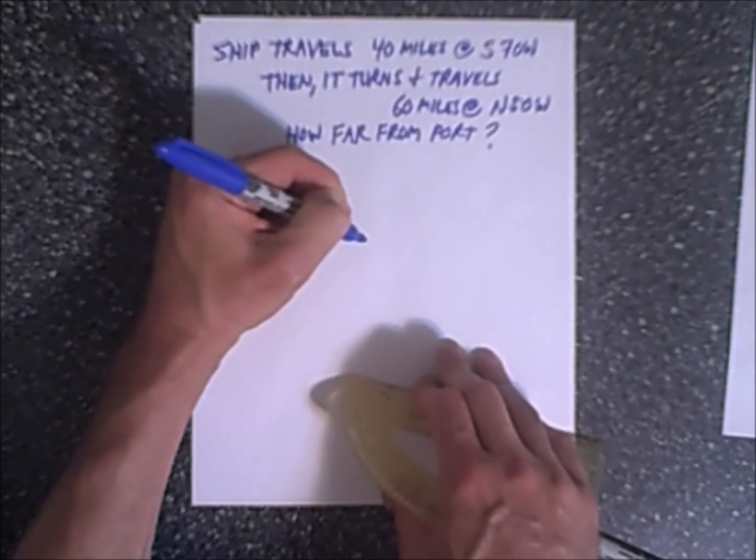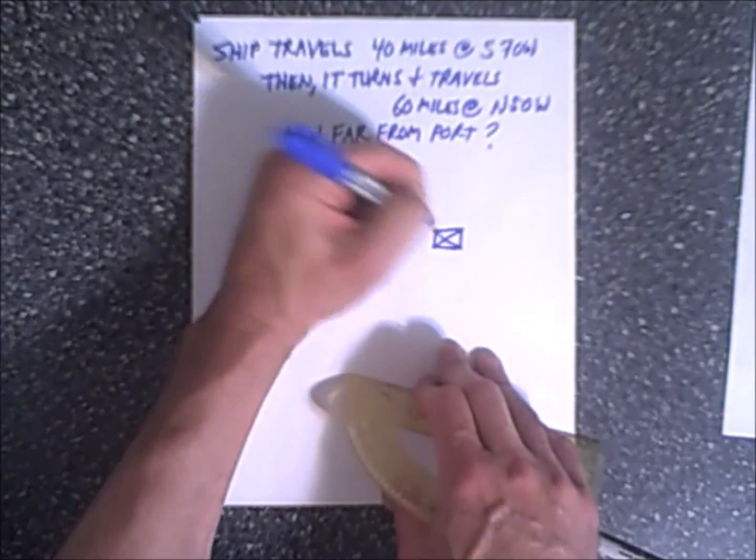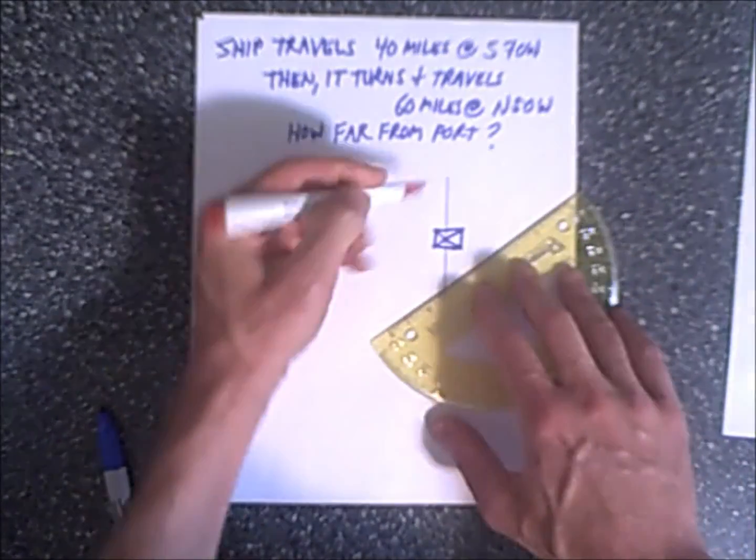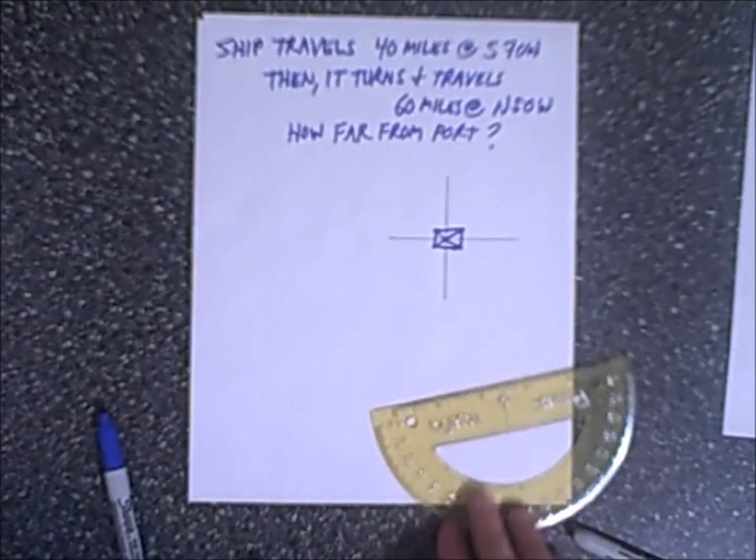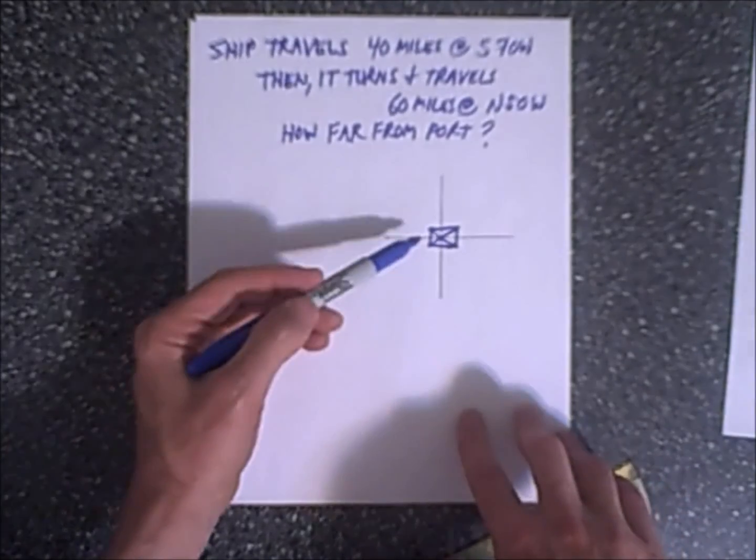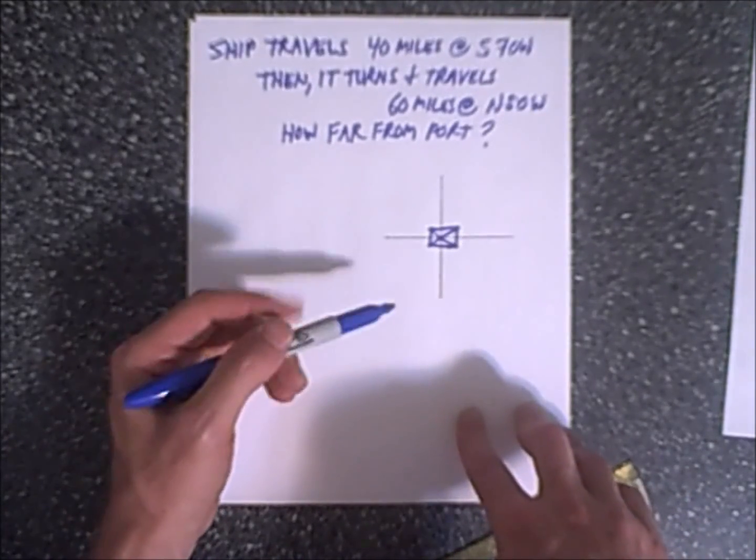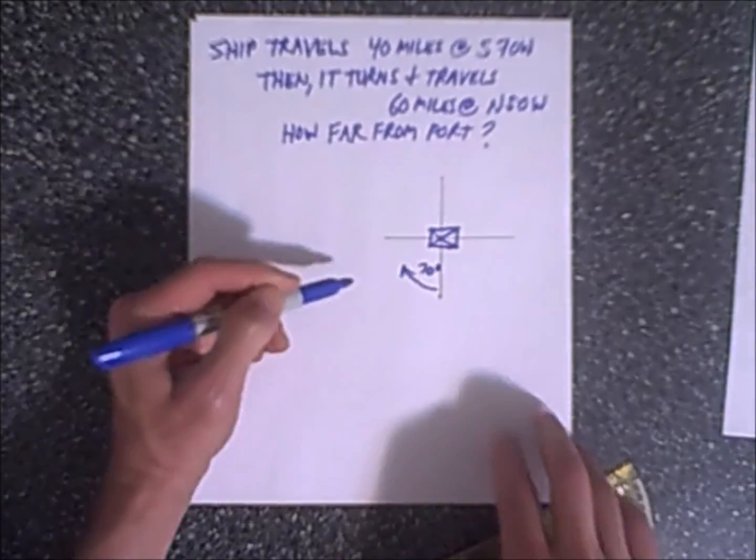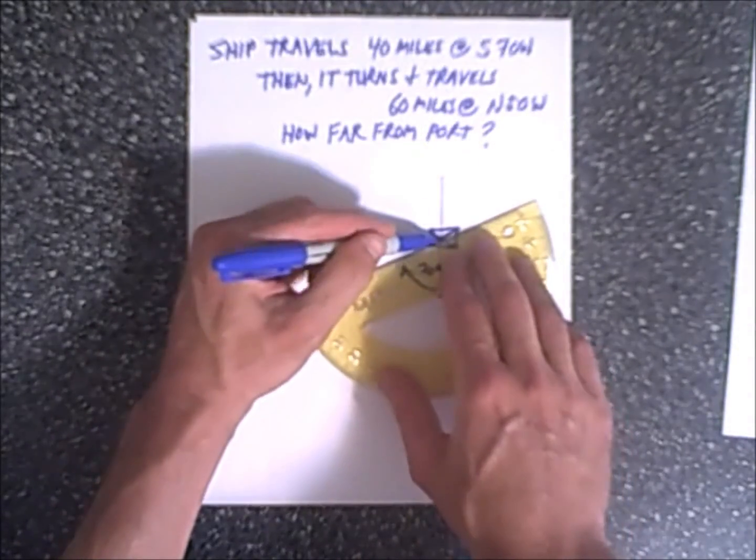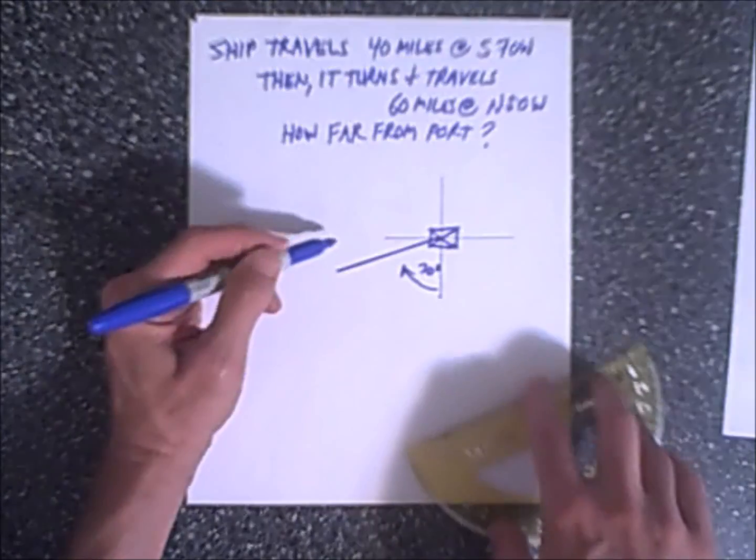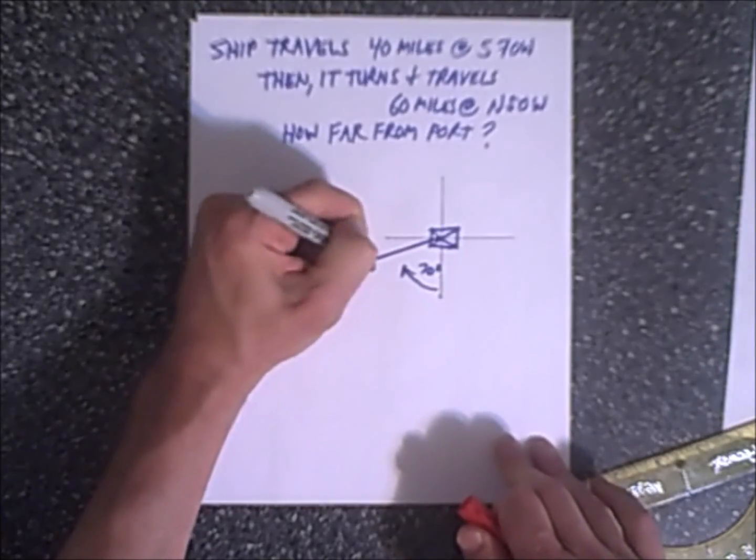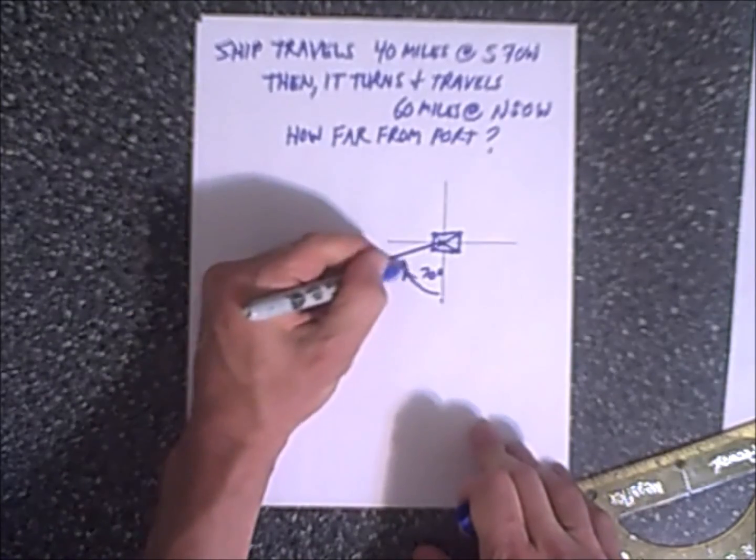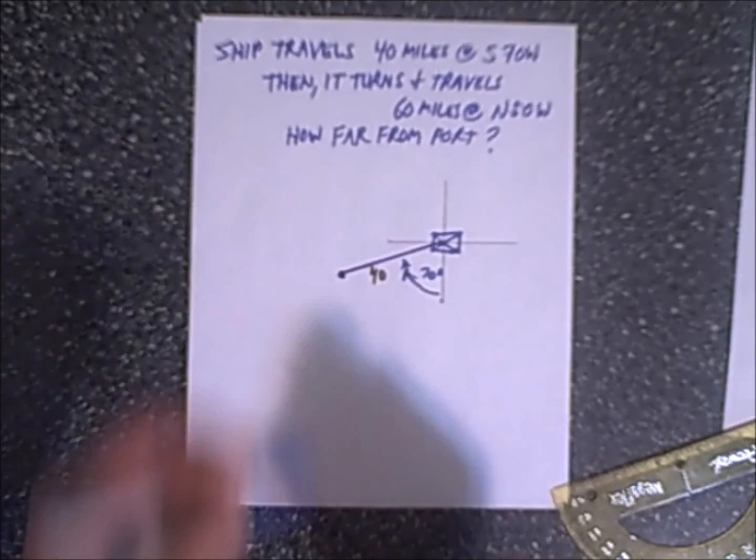We have our port. Let's put it over here. This is the port and the ship travels. Again let's draw a quick grid to help ourselves out a little bit. This is our north, south, east, west grid which helps us sketch direction. So the ship travels 40 miles south 70 degrees west. So south down here and 70 degrees, this is a 70 degree angle and west. So it's going to go about like this and we're going to make it 40 miles. So this is 40 miles and this is 70 degrees. So we have 70 degrees this way and now the ship is here.